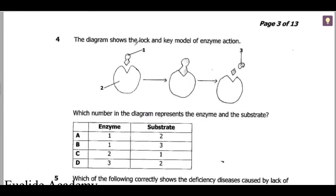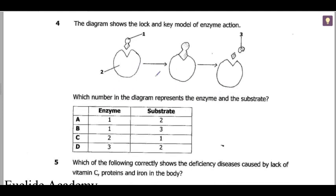Question 4: the diagram shows the lock and key model of enzyme action. Which number represents the enzyme and which represents the substrate? The enzyme is the structure that does not change — it stays the same throughout. The substrate changes at the end of the reaction. So two is the enzyme, and C is the correct answer.